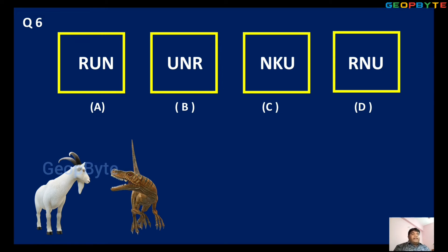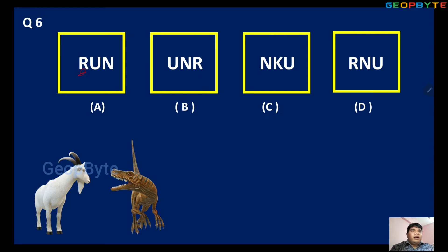This is from the 2019 examination. You can easily identify: options are R, U, N — R, N, K, U, R, N, U. Look at each letter: R, R, R, R — N, N, N, N — U, U, U, U — but in one option there is no R.